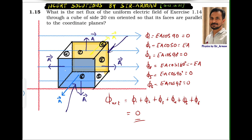The expression for electric flux is E·A·cos θ. For surface number one, the uppermost side, the area vector is pointing upward and the electric field is horizontal, so the angle is 90°. Therefore, E·A·cos 90° = 0.